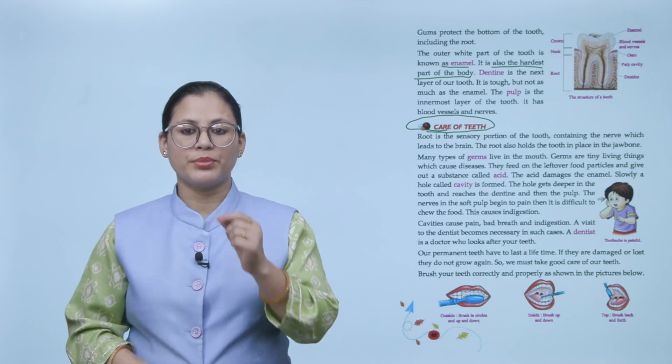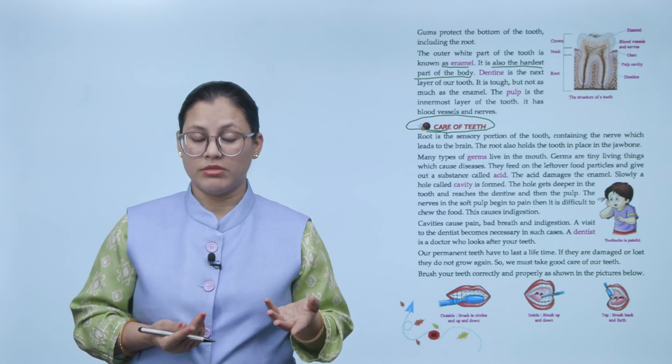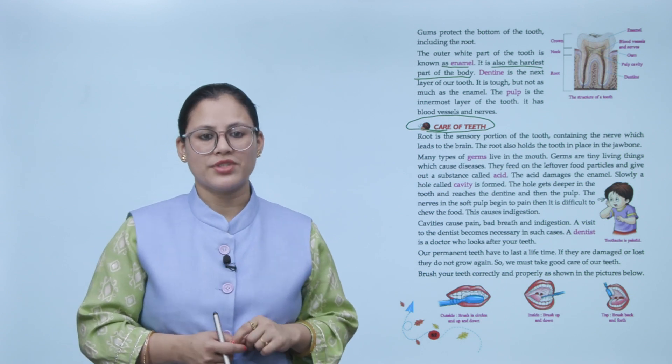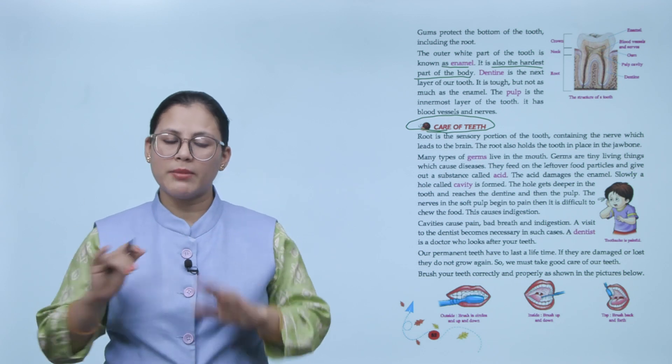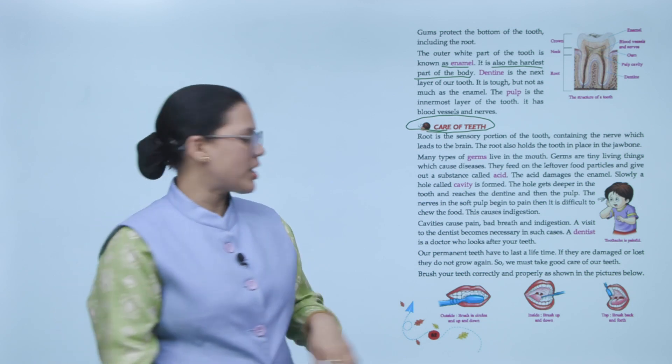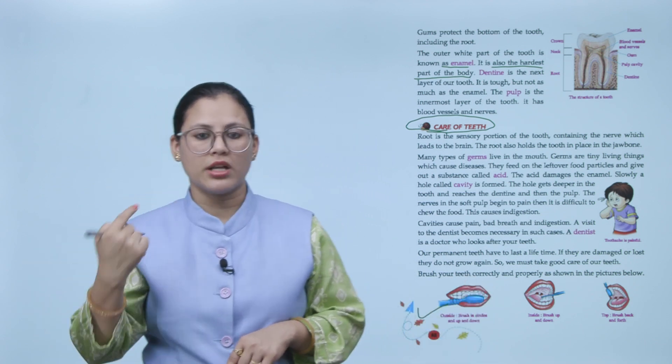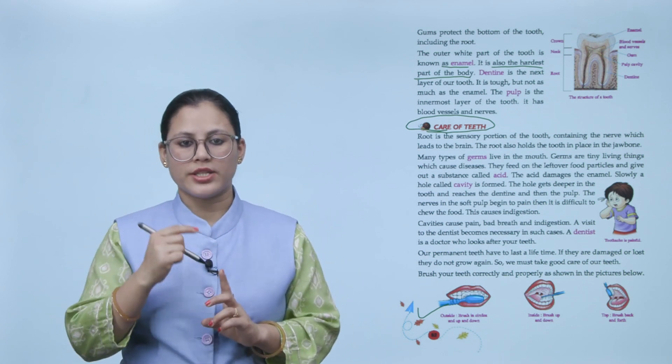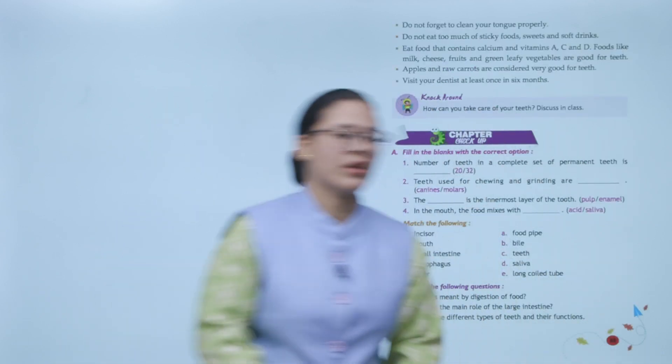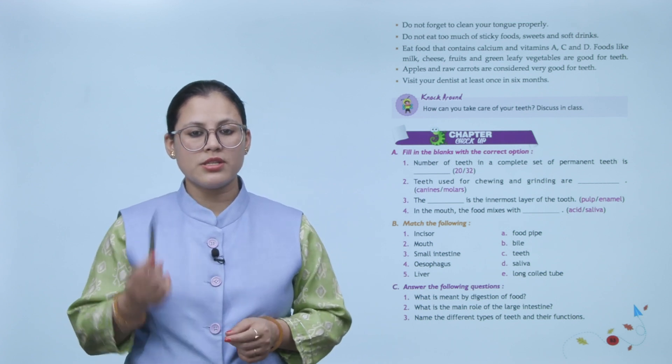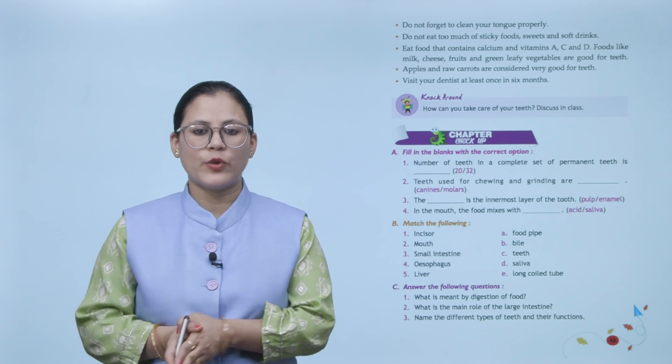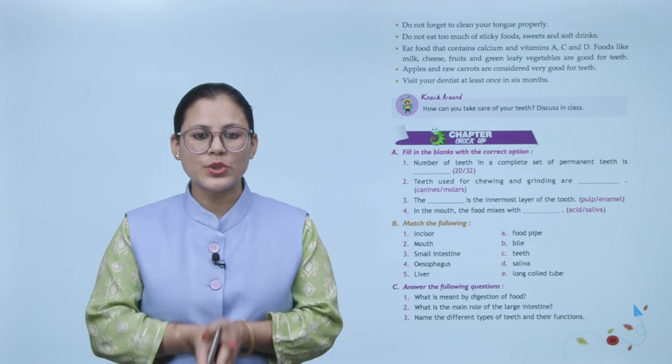Brush your teeth correctly and properly as shown in the pictures below. Cavities cause pain, bad breath and indigestion. So at this time you must visit your dentist. Dentist is the doctor who looks after your teeth. Because our permanent teeth will last our lifetime. If once they are damaged, once they break, they will not come back. So that is why we should take good care of them. This is the proper way to brush. Always brush up and down in circles. We generally do it like this, either left or right, but that is the wrong way. This is the right way that is given to you. Do not forget to clean your tongue properly. Do not eat too much of sticky food, sweets and soft drinks. Eat food that contains calcium and vitamins A, C and D. Foods like milk, cheese, fruit and green leafy vegetables are good for teeth. Apples and raw carrot are considered very good for teeth. Visit your dentist at least once in six months. After brushing your teeth, don't forget to clean your tongue. Don't eat too much sticky food, sweets, soft drinks. Eat food which has abundant calcium, which has vitamin A, C and D. Apples and raw carrots are very important for teeth, they are considered very good. And you must visit your dentist once every six months.